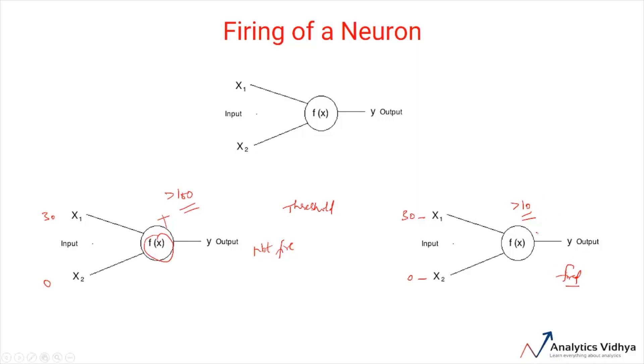Now, negative of threshold is called the bias of a neuron. Let's represent this mathematically.